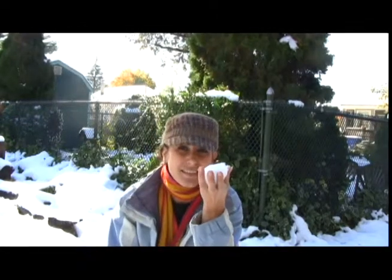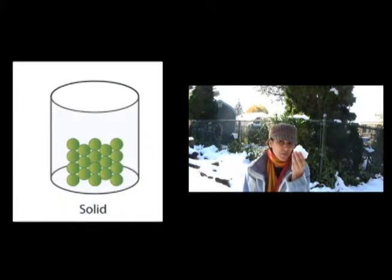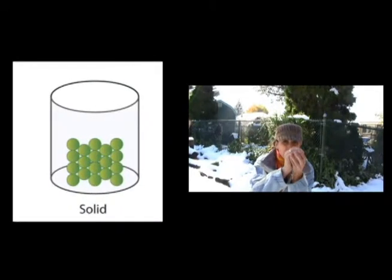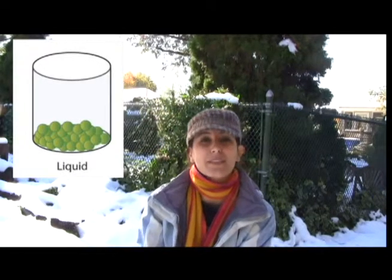Let's start here with this snow. It's in what state? Yes, a solid. Now, when a solid is formed, the particles within it are really close together. When the particles become further apart, it's known as a liquid. Do you know what falls from the sky when it's more in a liquid form?